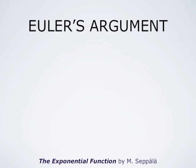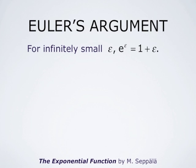The mathematical constant e is called e in honor of Leonhard Euler. He used the definition we gave for e and then argued using infinitesimally small and infinitely large numbers. He wrote that for infinitely small epsilon, e to the power epsilon equals 1 plus epsilon. This is the same observation we made when we graphed e to the x and its tangent line at x equals 0 and zoomed in near 0 — near 0, e to the x is inseparable from its tangent line 1 plus x.